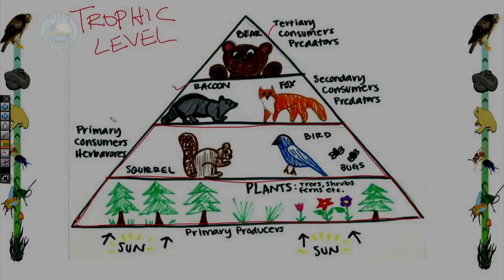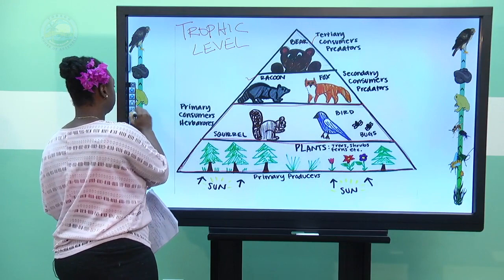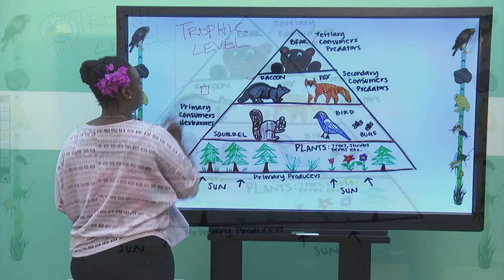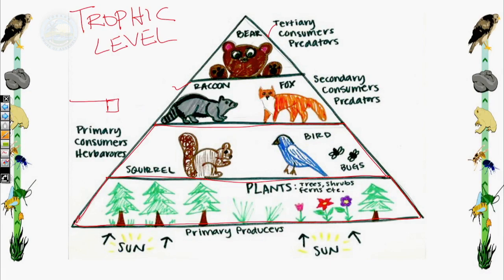Sometimes your pyramid may take an inverted shape. For example, hypothetically, we have one mango tree — a very small base — but that one mango tree may support 25 parakeets, then three snakes, then one owl. So here we have an inverted pyramid based on a particular ecosystem — in this case an arboreal or tree-based ecosystem.